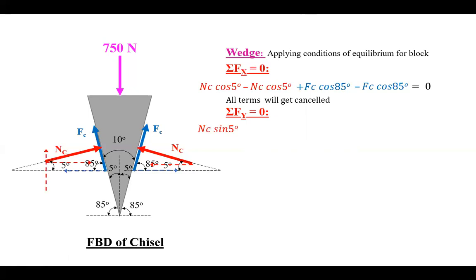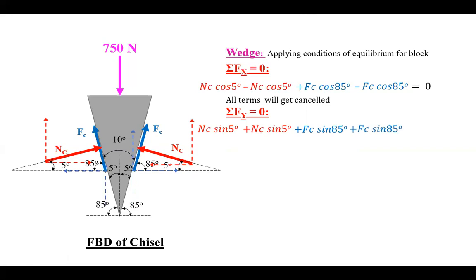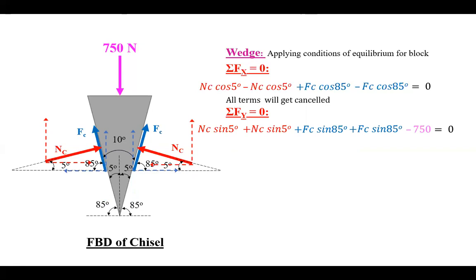Now applying sigma Fy equal to zero: the vertical component of the left-side Nc acts upward — positive Nc sin 5°. The right-side Nc also acts upward — positive Nc sin 5°. The right-side Fc acts upward — Fc sin 85°. The left-side Fc also acts upward — Fc sin 85°. The 750-newton applied force acts downward. So all upward force components must equal 750 newtons.